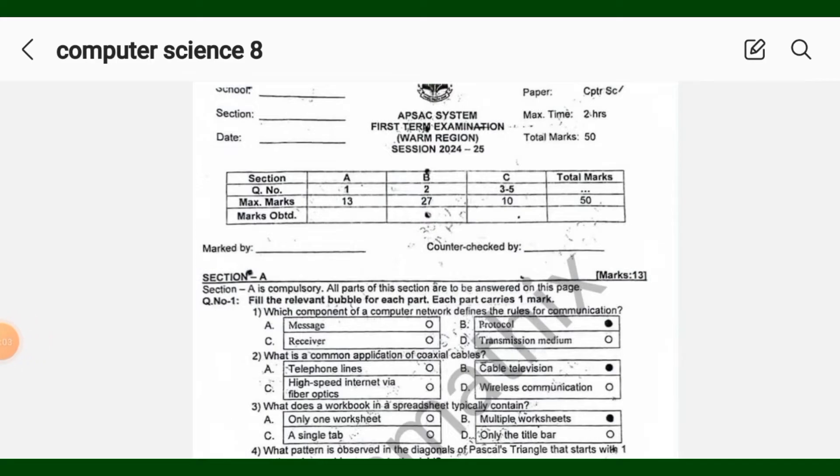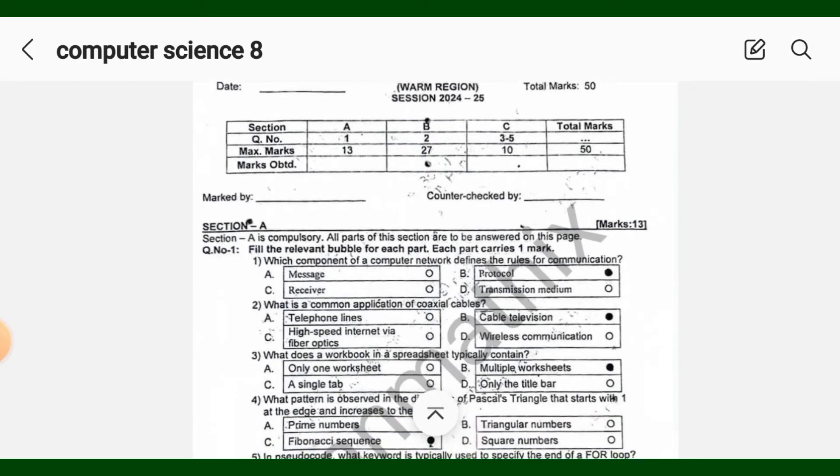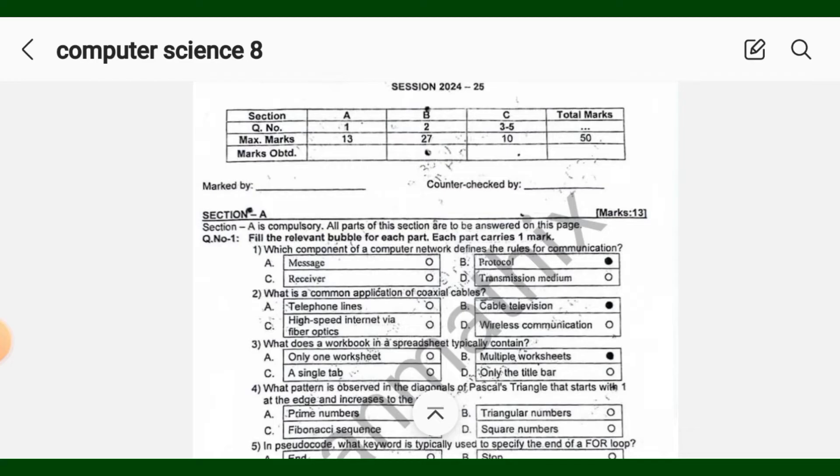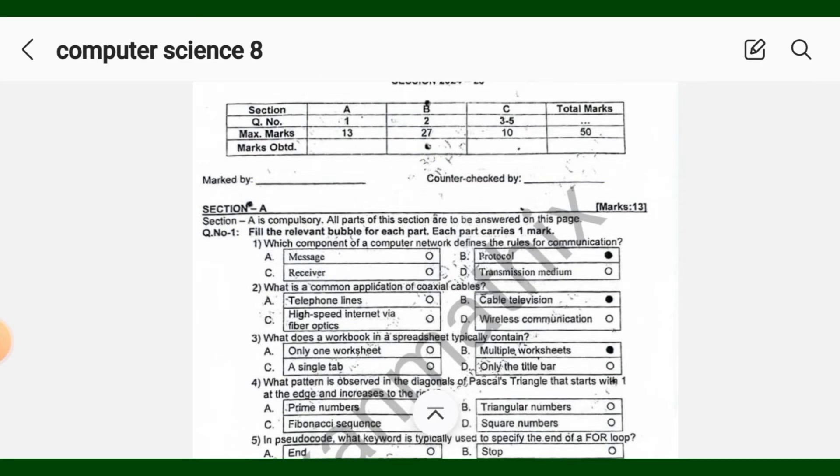Assalamu alaikum dear students, hope you all are fine. I'm sharing the answer key for Computer Science paper grade 8. Total marks of the Computer Science paper are 50. Section A: fill the relevant bubble for each part, each part carries one mark.